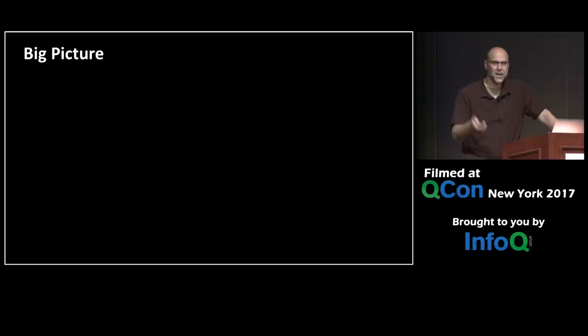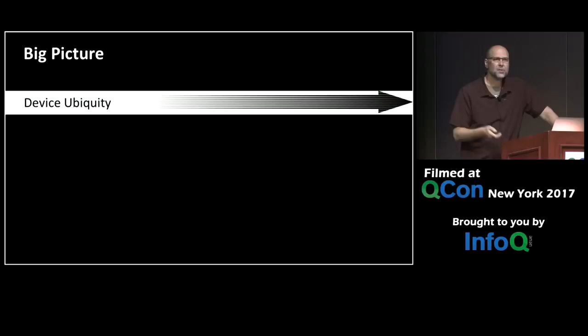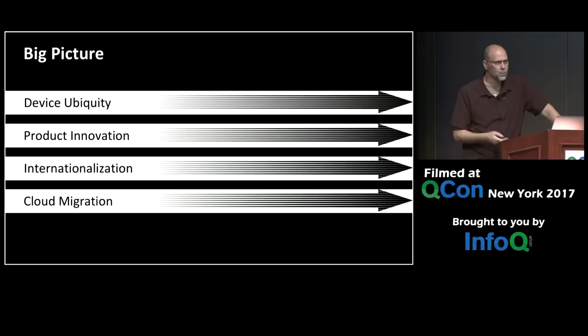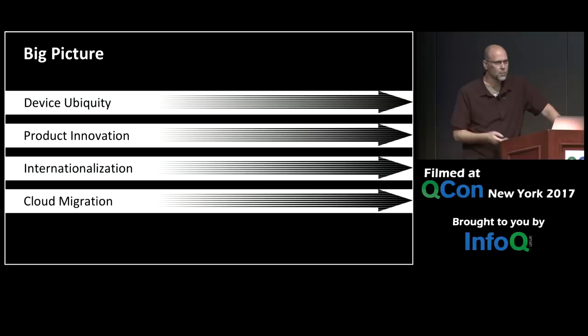What I came to realize was that there were many parallel tracks of work I needed to accommodate. Netflix wanted to be on every possible device that made sense. Product innovation would continue at a relentless pace. We were going to roll out in Canada in 2010, so internationalization was needed. And cloud migration at the same time — we'd already decided in 2009 to move to the cloud. Plus service reliability: we had a service running and people expected it to work, and reliability was a bit of a challenge in the early days.